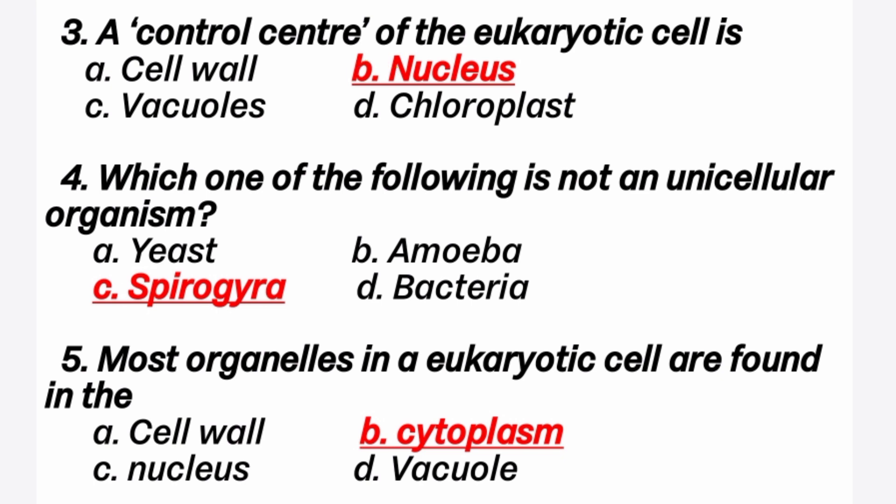Fourth question: which one of the following is not a unicellular organism? Unicellular organism means an organism made up of a single cell. That's why one organism, one cell — that is called unicellular organism. The answer is C option, spirogyra, because spirogyra is a multicellular organism. Yeast, amoeba, and bacteria are unicellular organisms.